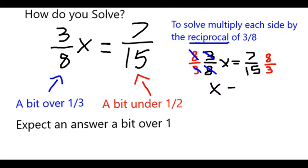And on the right-hand side, in order to balance it out, I still have to multiply by 8 over 3. But that gives me on the top 7 times 8, which is going to be 56 on the top.